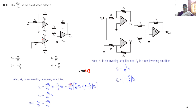Taking -(R4/R3) outside: V_out = -(R4/R3)·(V_naught_1 + V_naught_2). Substituting V_naught_1 and V_naught_2: inside we have -(R2/R1)·V_in + (1 + R2/R1)·V_in. The -(R2/R1)·V_in and +(R2/R1)·V_in terms cancel each other. Finally, V_out = -(R4/R3)·V_in.